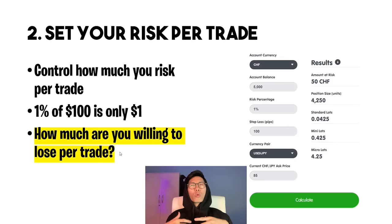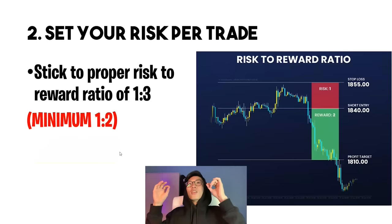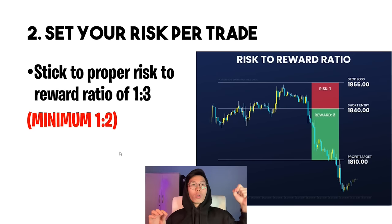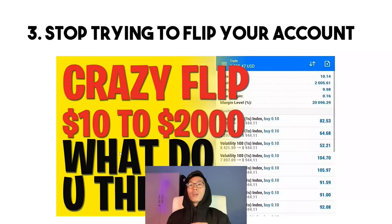Ultimately it depends on how much you're willing to lose per trade. If you're not comfortable with that amount, use a smaller lot size. You determine your lot size by using a position size calculator — just Google one and it will tell you what lot size to use based on your risk amount. No matter how much you risk per trade, you must stick to a proper risk-to-reward ratio of at least 1:2, or ideally 1:3, meaning potential profit should be double or triple the potential loss.